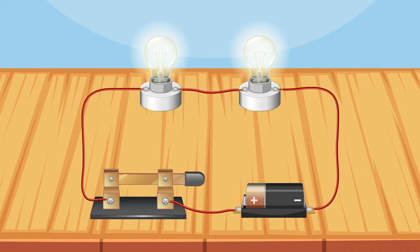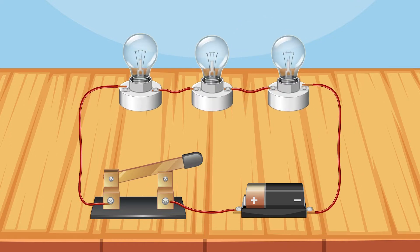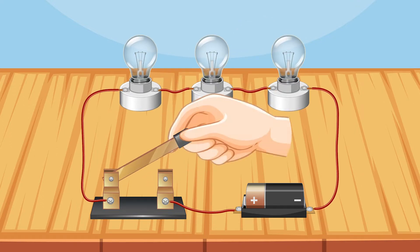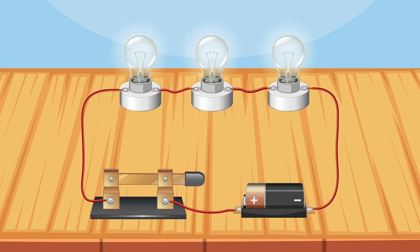Now let's add a third bulb to our series circuit. We close the switch again. Look at that — the brightness decreases even further. As more and more bulbs are added in series to the circuit, each bulb receives a smaller portion of the total voltage, which leads to a reduction in brightness.